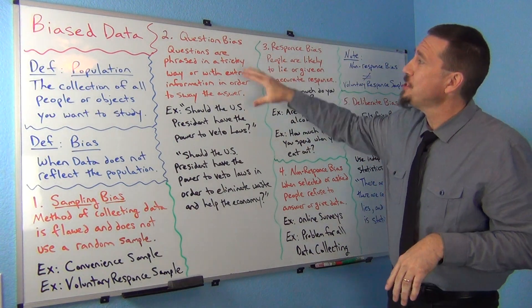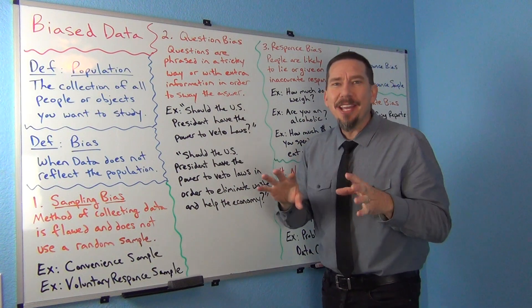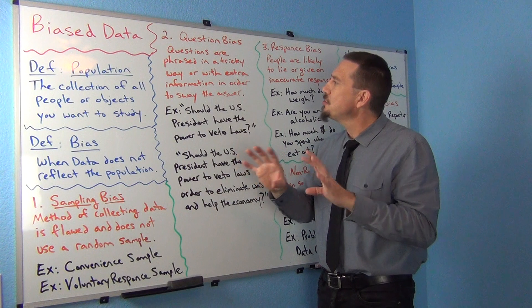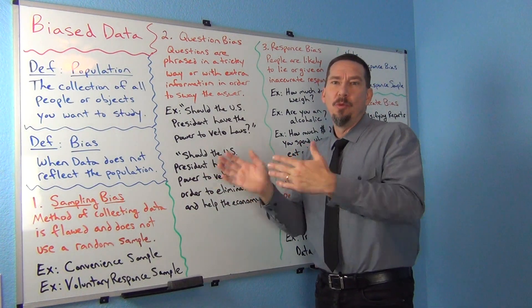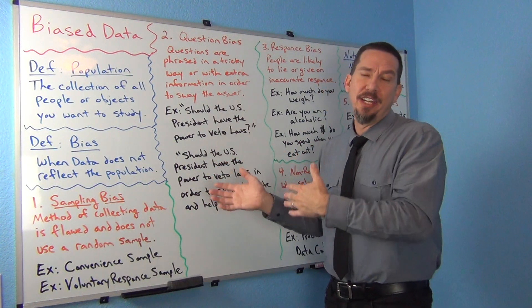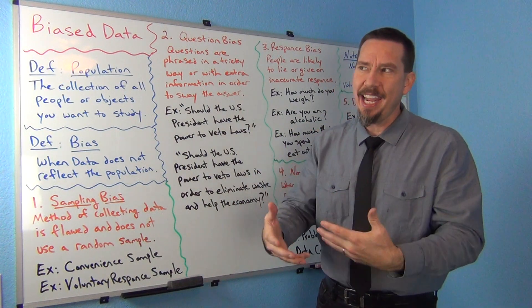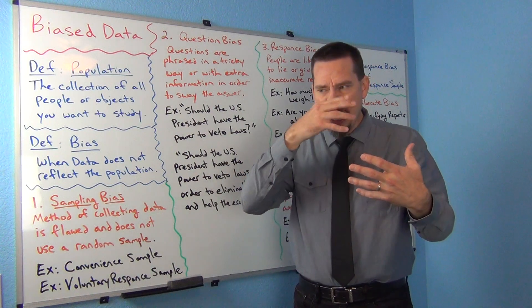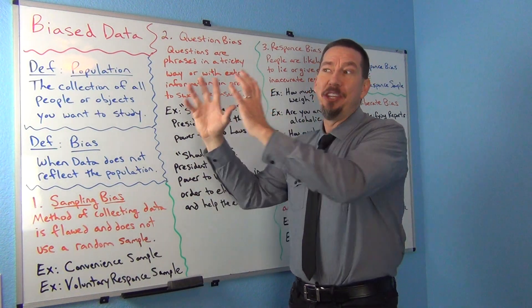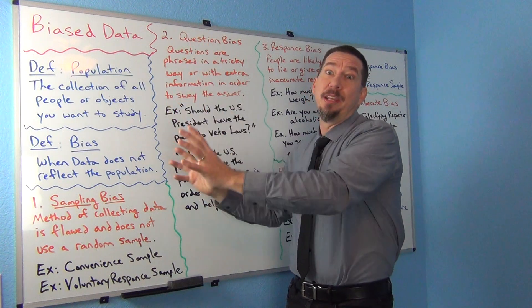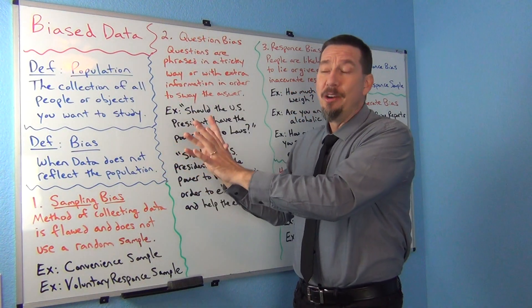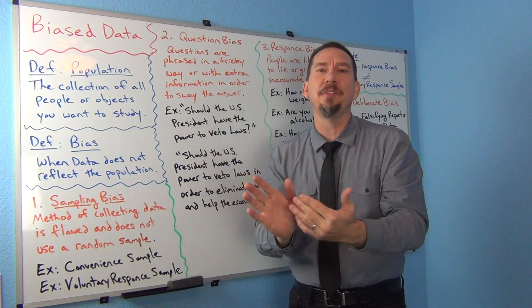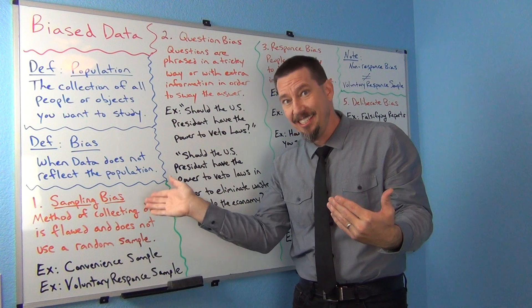Question bias is where the question is phrased in a tricky way with extra information to sort of sway the reader one way to give a certain answer. So if you want to collect some data, but you need the data to reflect that your business is really good and people think your business is really good, well then you could phrase the question in a tricky way to force people to say that your business is good. It's really sneaky.